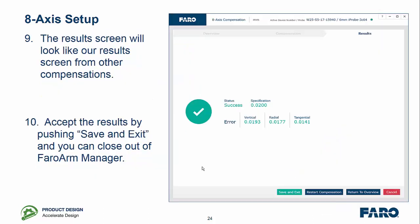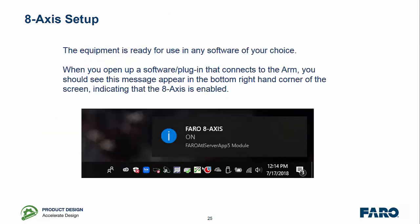When you've finished, the results will come up and tell you whether you've passed in vertical, radial and tangential. And you simply accept the results by pressing Save and Exit from the Faro Arm Manager. Now you choose which software you want to use and when you open it up, in the bottom right hand corner, it should tell you that the Faro 8-axis is on.